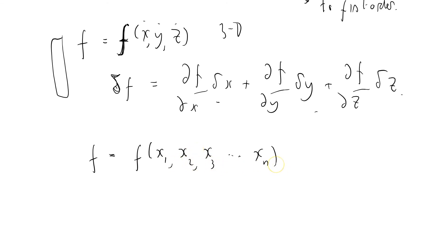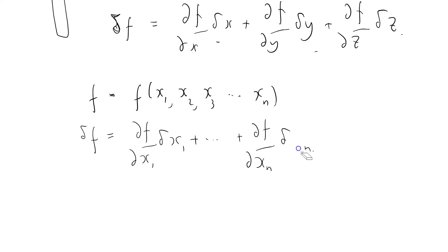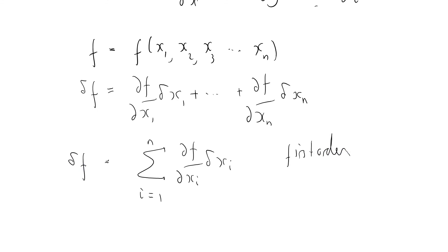More generally, for f = f(x₁, x₂, ..., xₙ), again to first order: δf = (∂f/∂x₁)δx₁ + ... + (∂f/∂xₙ)δxₙ, which equals the sum from i = 1 to n of (∂f/∂xᵢ)δxᵢ. This is a beautiful result. What we're finding is that the function f has multiple dependencies; we need to unpack all of those to work out δf. We differentiate f with respect to all its arguments and multiply each partial derivative by how far we've gone in each direction.